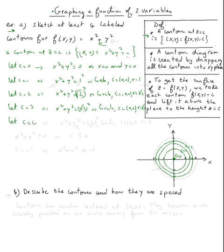The level curve at c = 4 gives x² + y² = 4. Four is the same as 2², so it's a circle with center (0, 0) and radius 2. Also note that since x² + y² ≥ 0, we have c ≥ 0, so we cannot use a negative value of c — x² + y² cannot equal a negative number.